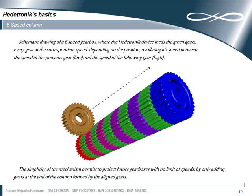Using this principle, here is an example of a six-speed gearbox, where the Headatronic device feeds the green gears. The simplicity of the mechanism permits to project future gearboxes with no limit in the quantity of speeds.